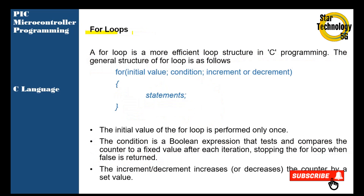For loop: a for loop is a more efficient loop structure in C programming. The general structure of a for loop is as follows: for, initial value, condition, increment or decrement, and statement.